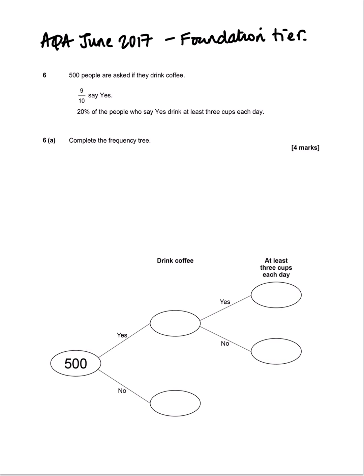We have 500 people in total, which they've put here in the frequency tree. 9 tenths of those people say yes, so 9 tenths of 500 belong in this box here. When we're finding 9 tenths of 500, we divide by the bottom and then multiply by the top. So 500 divided by 10 is 50, and then 50 multiplied by 9, well 5 multiplied by 9 is 45, so that must be 450.